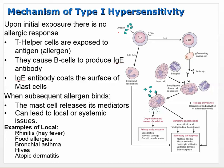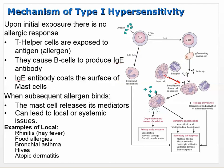The mechanism of type 1: upon initial exposure, there's no allergic response. It goes through the entire immune process - T helper cells are exposed to it through antigen presenting cells, causing B cells to produce IgE. Those IgE antibodies coat the mast cells. The first time you're exposed you really don't have a reaction, but subsequent times everything is ready to go.